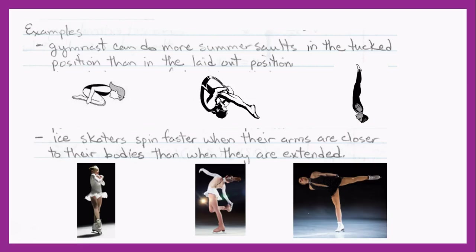Our second example involves ice skaters spinning. In the first picture, the mass is closely distributed to the axis of rotation. As the legs and arms extend further away, the distribution of mass increases from the axis. On the far right, the torso and leg are fully extended, distributing mass as far from the axis as possible. As you've seen in ice skating, a skater will change their body position during a spin, speeding up or slowing down their rate of rotation as a result.